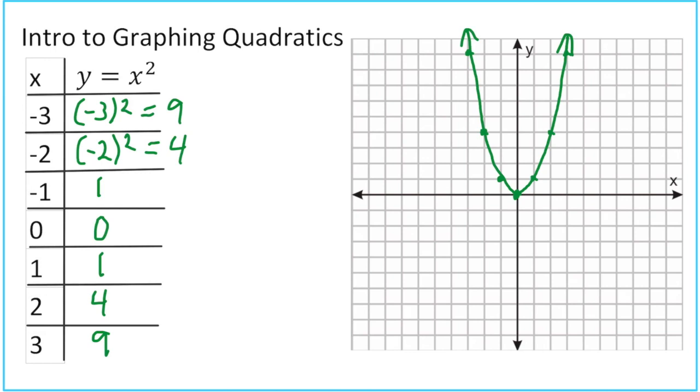So that is our parent graph. Let's take a look at where the x squared part shows up in this graph. Here's what you don't want to think about. You don't want to look at these points and say, from this point 0, 0, I'm going up 1 over 1, up 3 over 1, up 4, 5 over 1. That is a pattern, up 1, up 3, up 5.